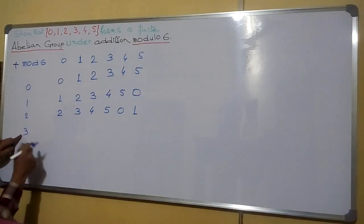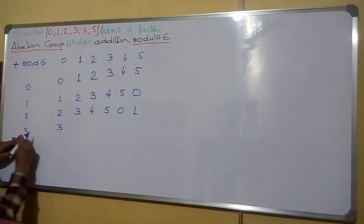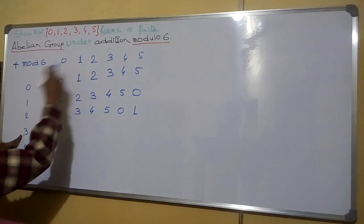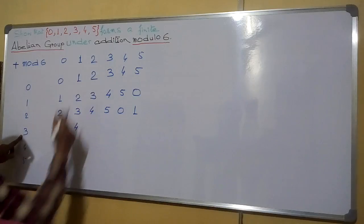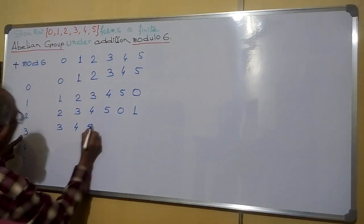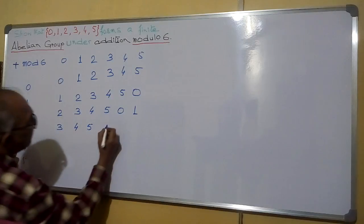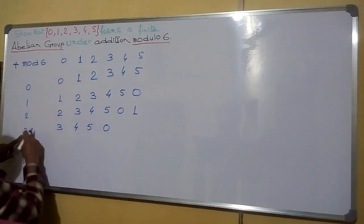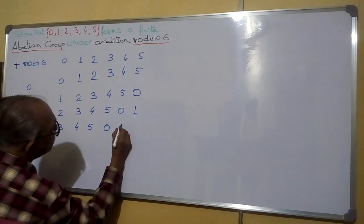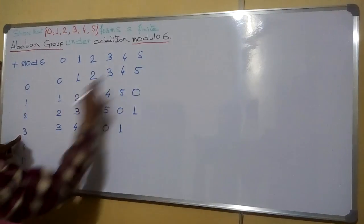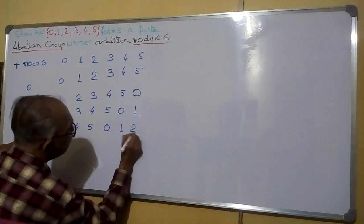3 plus 0 is 3; the remainder is 3. 3 plus 1 is 4; it will be 4. 3 plus 2 is 5; it will be 5. 3 plus 3 is 6; dividing by 6 the remainder is 0. 3 plus 4 is 7; dividing by 6 the remainder is 1. 3 plus 5 is 8; dividing by 6 the remainder is 2.